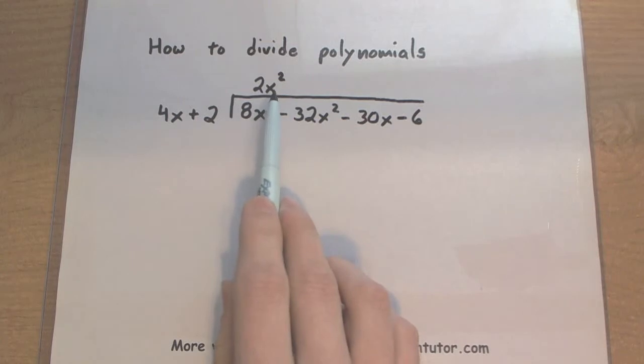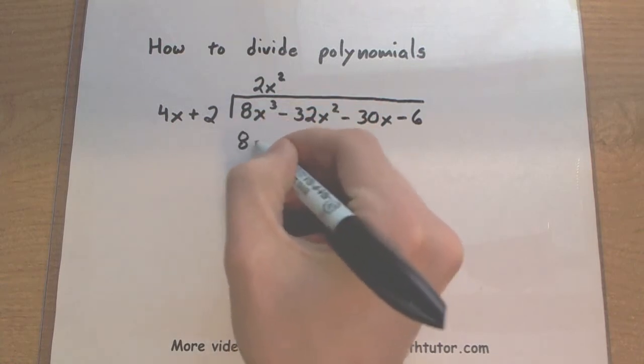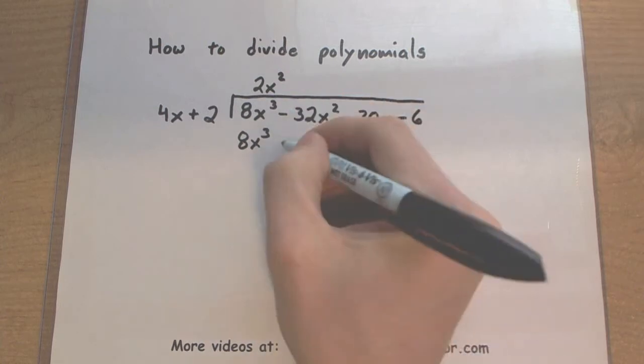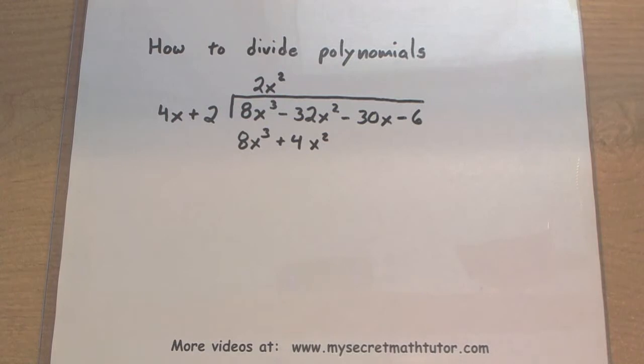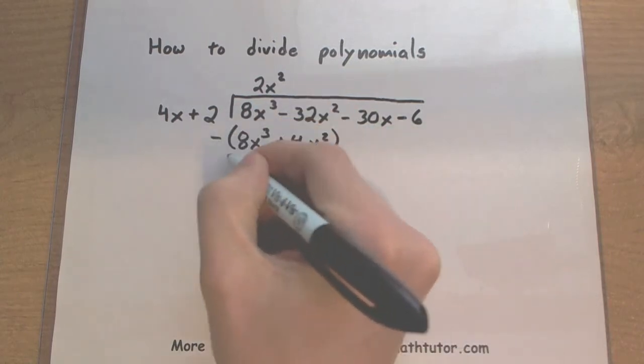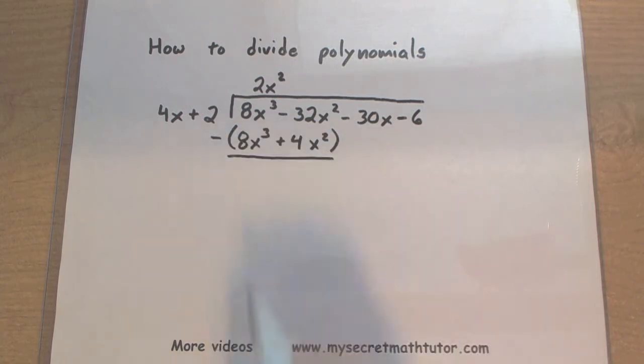we're going to go through and multiply by 4x plus 2. So first take it by the 4x, so we'll give you an 8x cubed. Then we'll multiply it by the 2, so a positive 4x squared. Now here's the important part. We want to subtract this entire thing away. To help myself out, put a pair of parentheses up there and a negative sign.